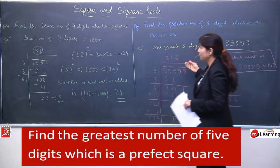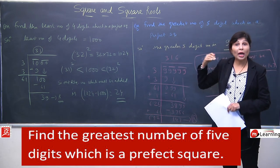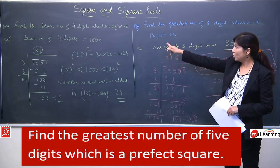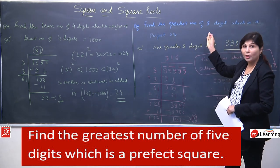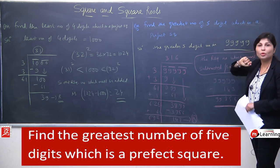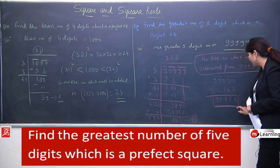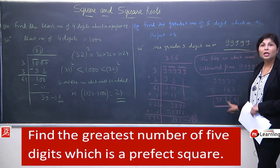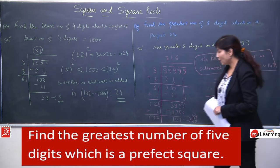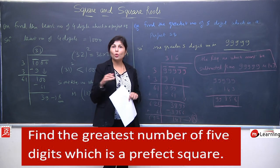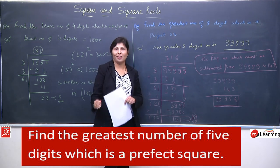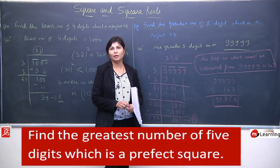Toh aapke saamne dono question hain, students. Ek least number of 4-digit hai - wahan par aapko add karna pada, kyunki agar aap add nahi karte toh answer 3-digit mein convert ho jaata. Similarly, yahan greatest diya hai toh hume subtract karna pada, kyunki agar hum isme add karte toh yeh 6-digit mein convert ho jaata. Greatest number of 5-digit - 99856 hi aisa number hai jiska square root niklega. I have taken lots of examples for you, ki jisse aap kisi bhi situation mein solve kar sakein. Yeh pattern exam mein aata hi hai, toh full marks laane ke liye bahut saare questions practice karna hoga.